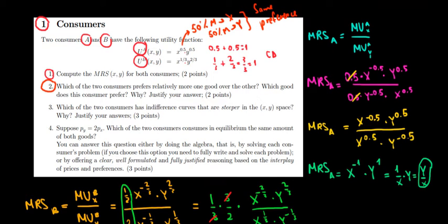Now let's use the same logic for consumer B and see what's happening there. If we have a look here we can see that he is spending 1 over 3, which is the same as 33% on good X, and 2 over 3, which is the same as 66% on good Y.